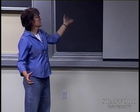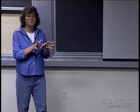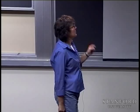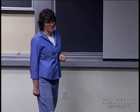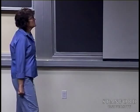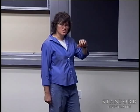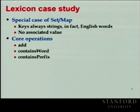Let me refresh what the Lexicon does. It is a special case of a set or map — a container where you stick things in, they're unique, no duplicates. The keys are always strings, and in fact they're English words. That's important: they're not just arbitrary sequences of letters; they have certain patterns and sizes we could capitalize on. It has no associated values — no dictionary definitions or synonyms. It also has a prefix operation that was critical for pruning dead-end paths in Boggle searches.